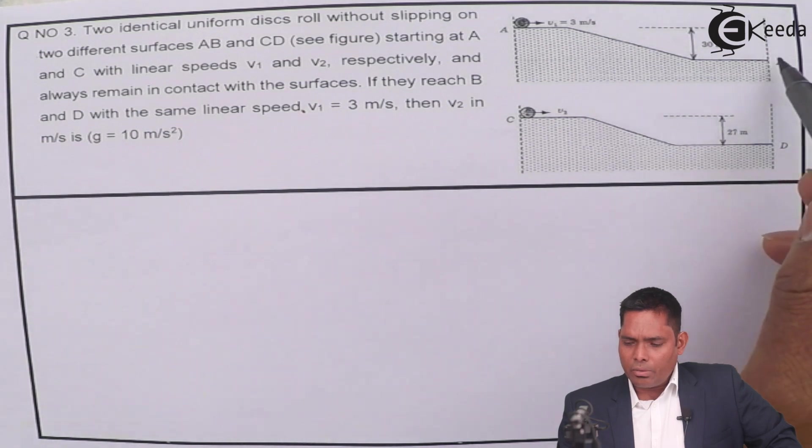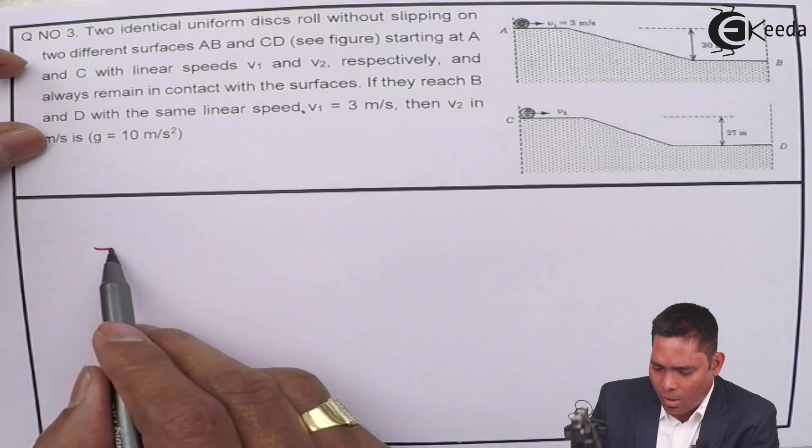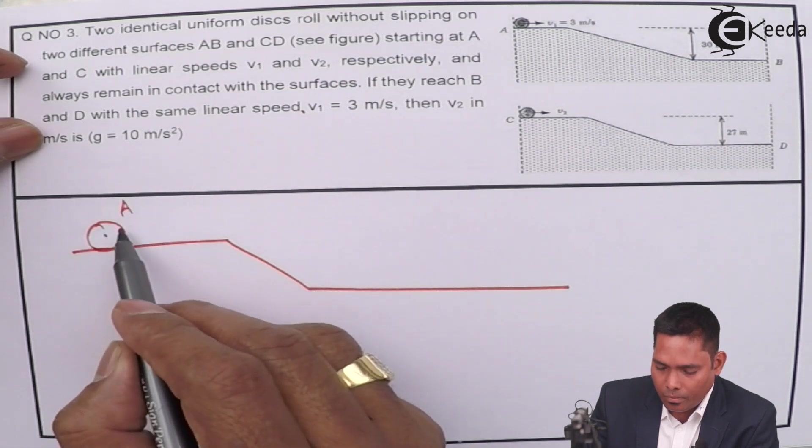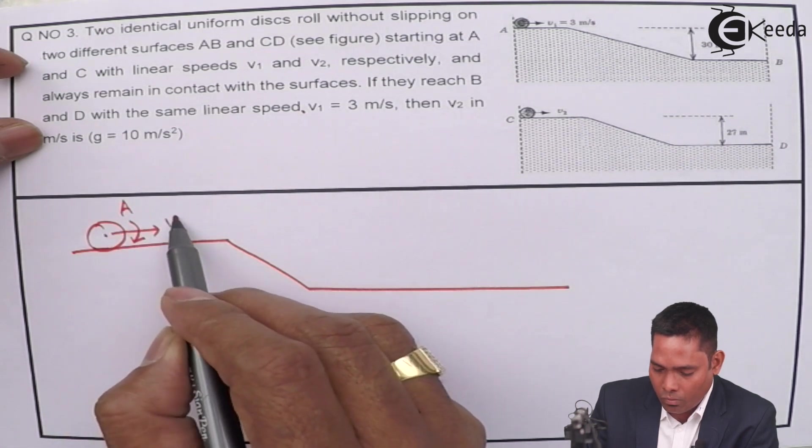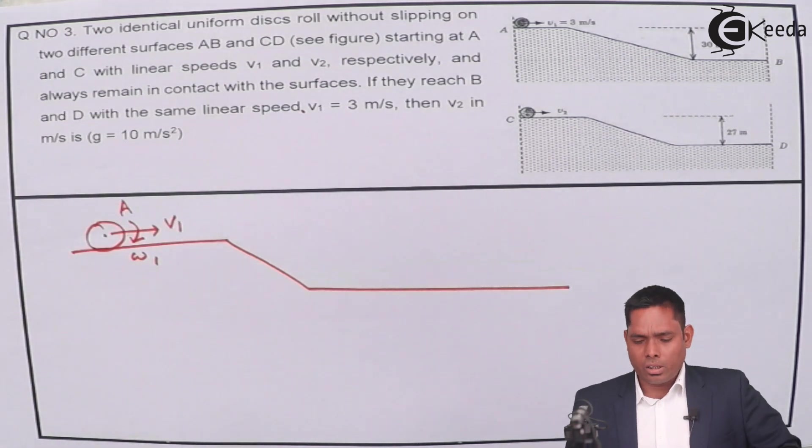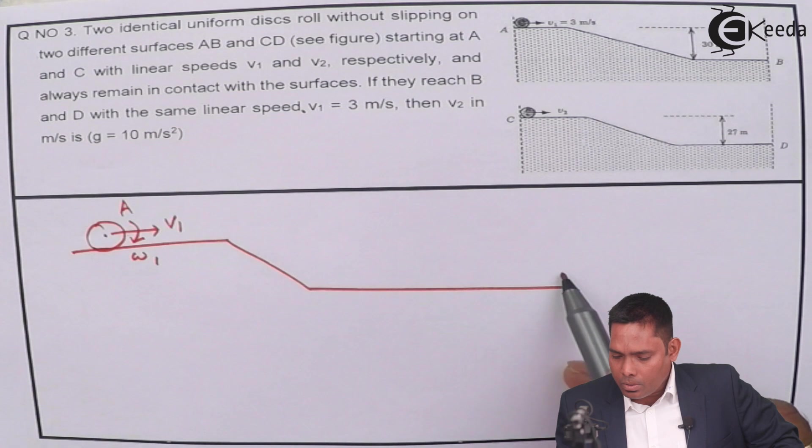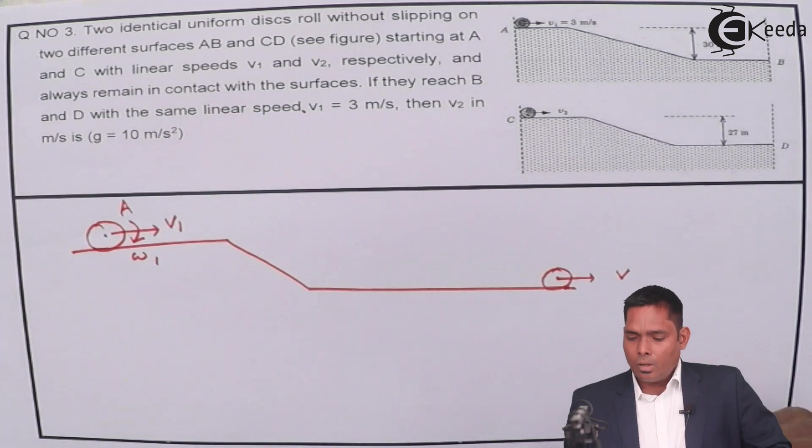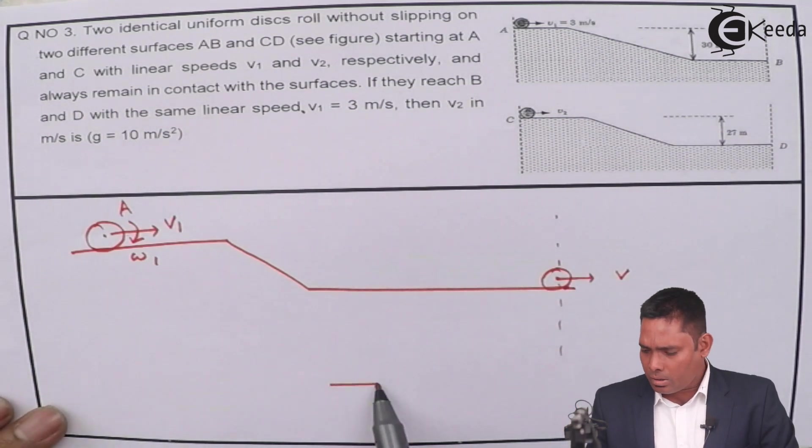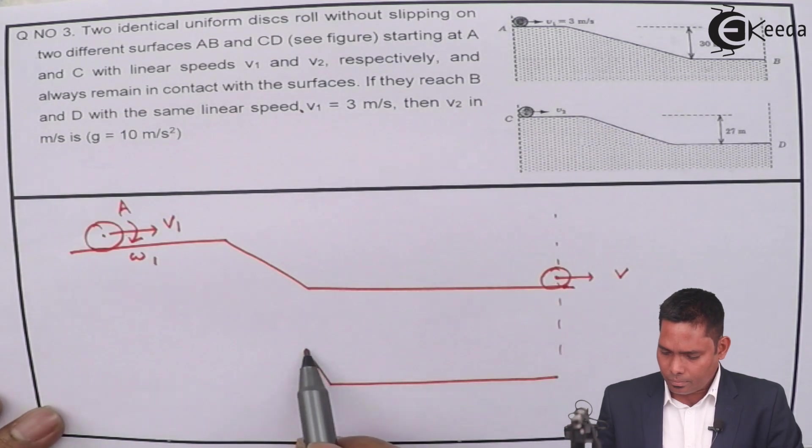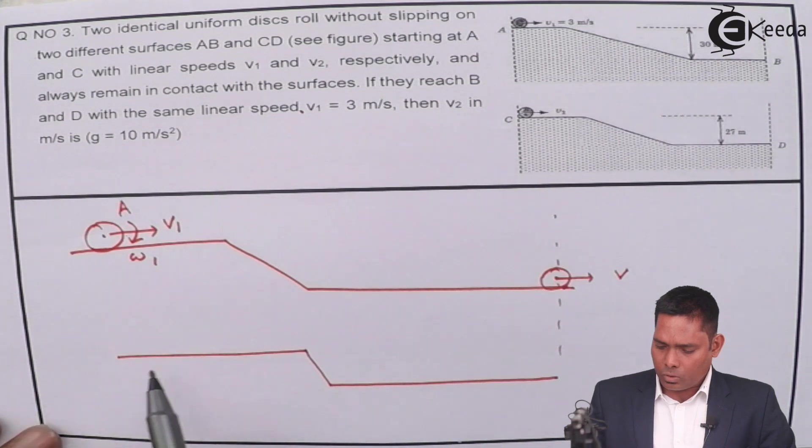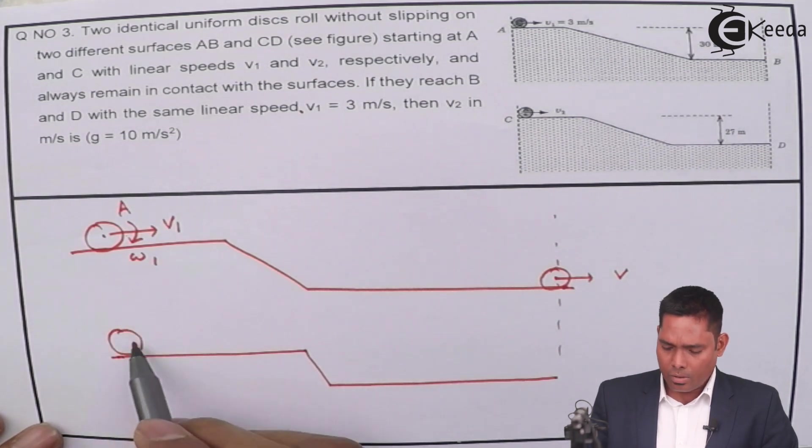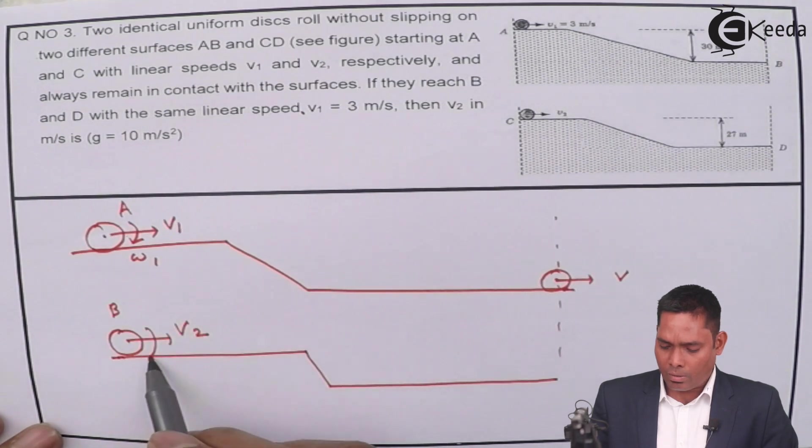They reach here with same linear speed. So the question is that this one rolls with velocity V1 and angular velocity omega 1, rolls down and then comes out here with the speed V. And the same situation is for this one.